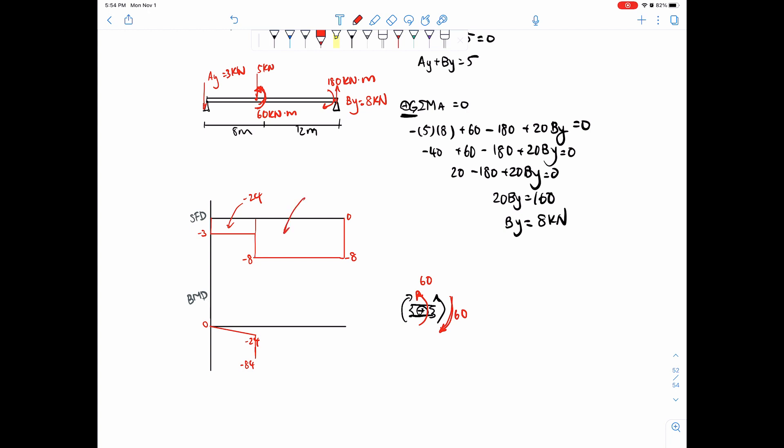And then finally, this area, 12 times 8 is equal to negative 96 in this area. And we can go down, negative 84 minus 96 is equal to negative 180. And then this moment right over here, there's a clockwise moment being applied. So we need the same amount, and it would be going up and back to zero. So that's it for this question.